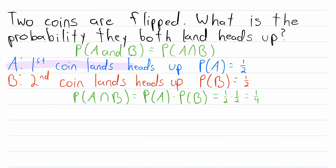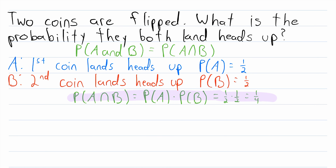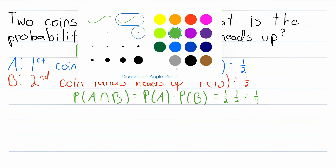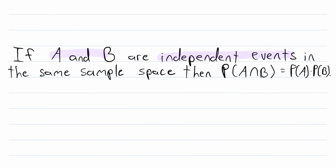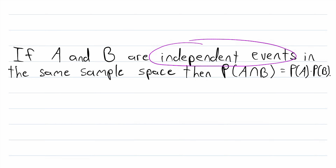This works because these two events are independent, which means that either one of them occurring doesn't affect the probability of the other occurring. If the first coin lands heads up, that doesn't change how likely the second coin is to land heads up. So to find the probability that they both occur, we just multiply their individual probabilities together. This is a special case of the multiplication rule: if A and B are independent events in the same sample space, then the probability of A intersect B is equal to the probability of A times the probability of B.